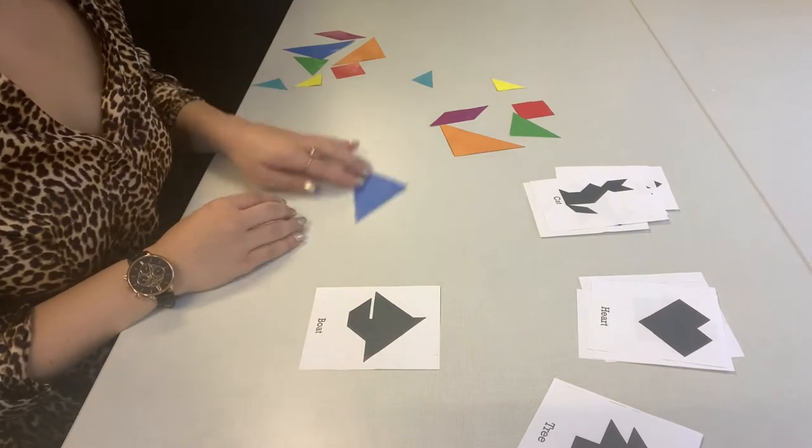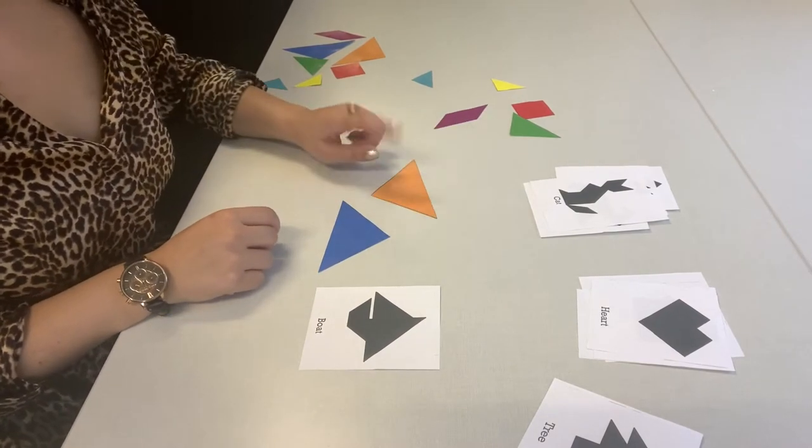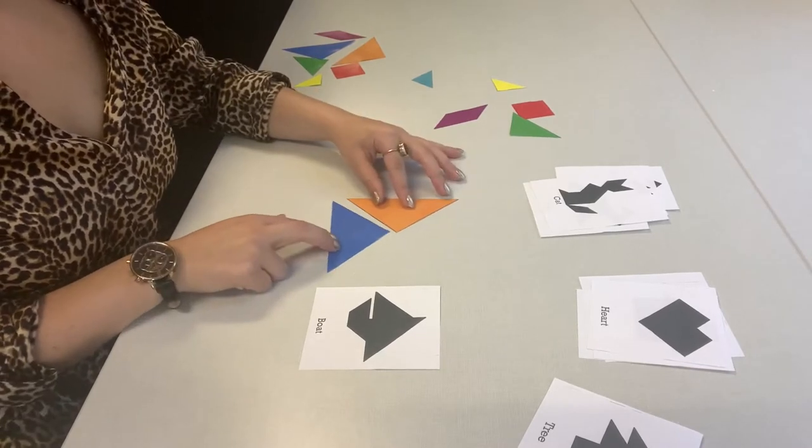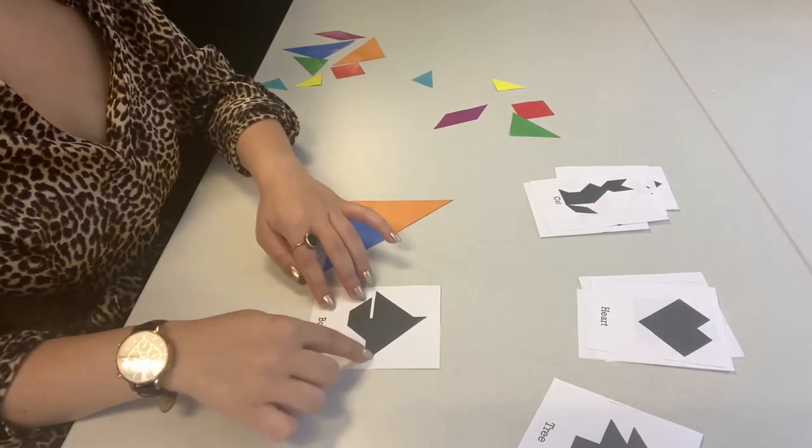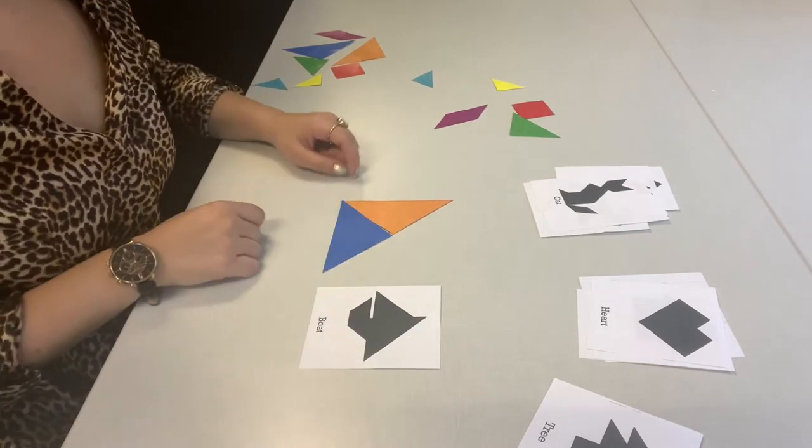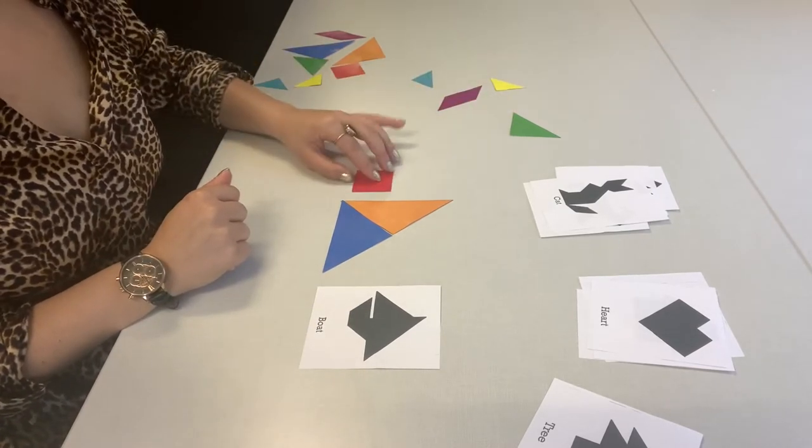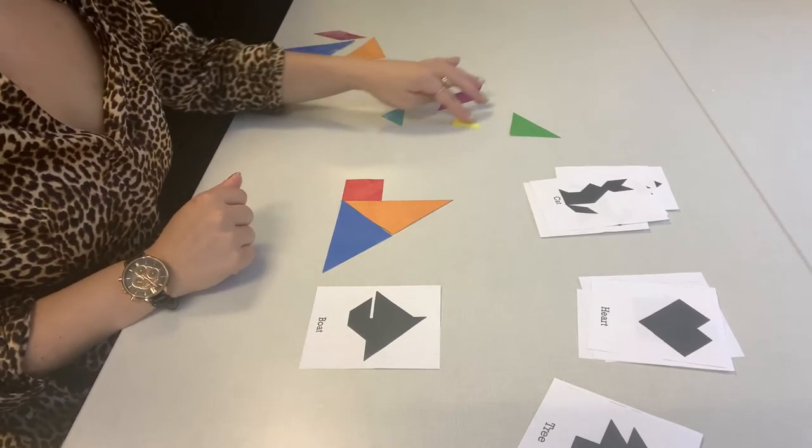We're going to go ahead and grab the blue triangle and then the orange triangle. We're going to create that big sail. And then we'll do the little sail, which will be the square, and the two little triangles.